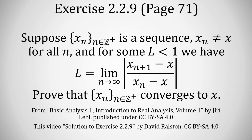Suppose you have a sequence xn which is never equal to a specific value x. Also, there is a given L, a real number less than 1, so that L equals the limit as n approaches infinity of the absolute value of the ratio xn plus 1 minus x over xn minus x.